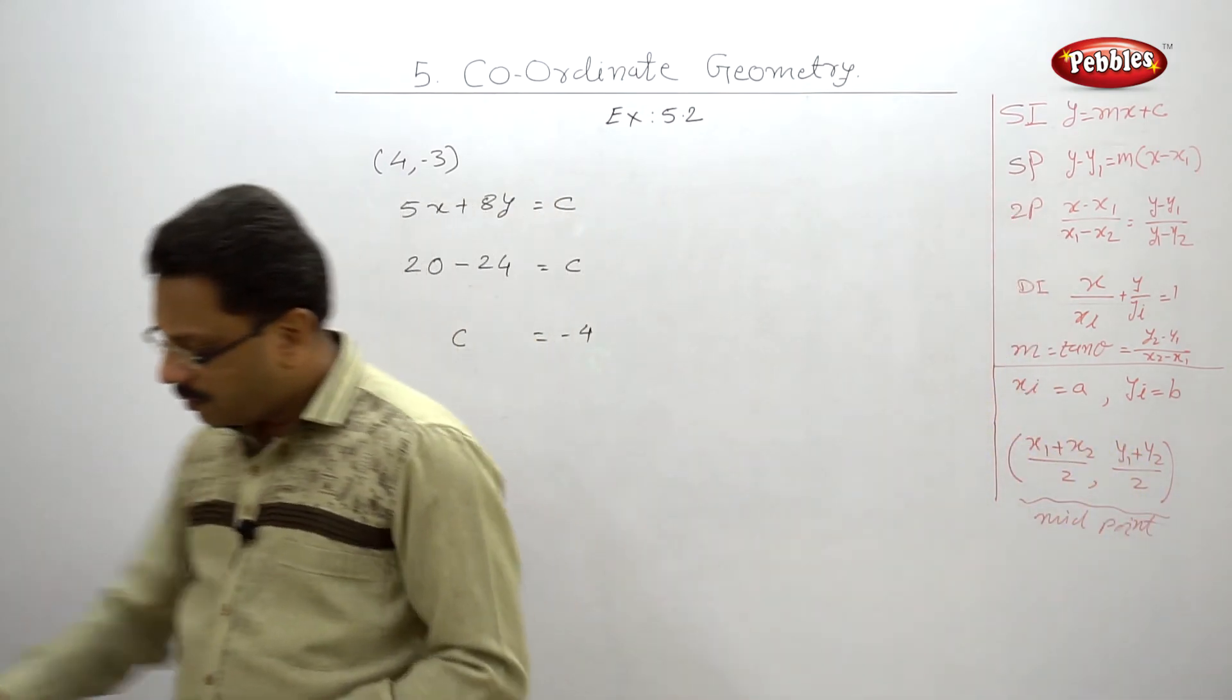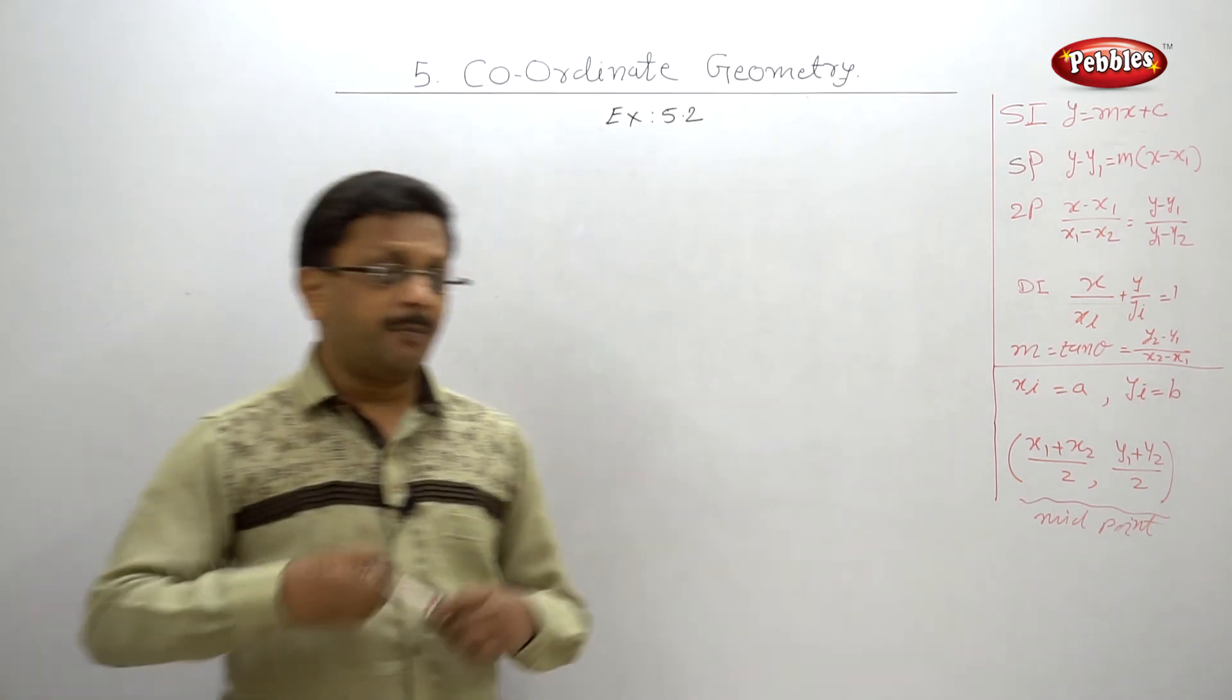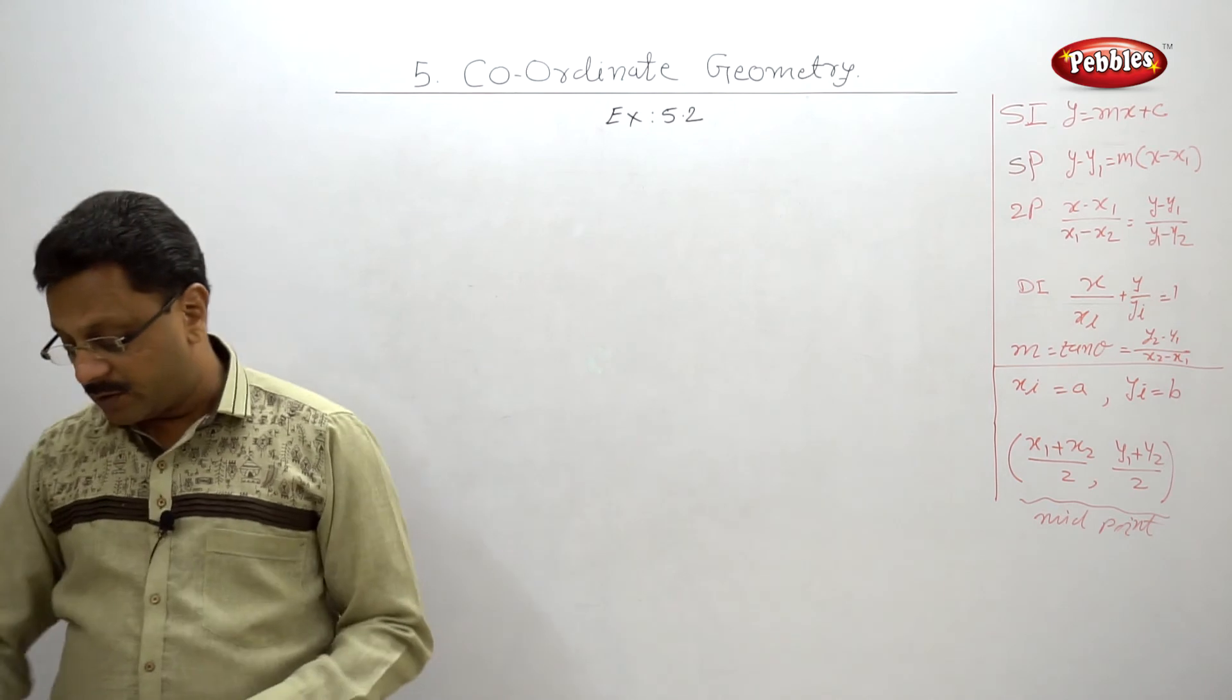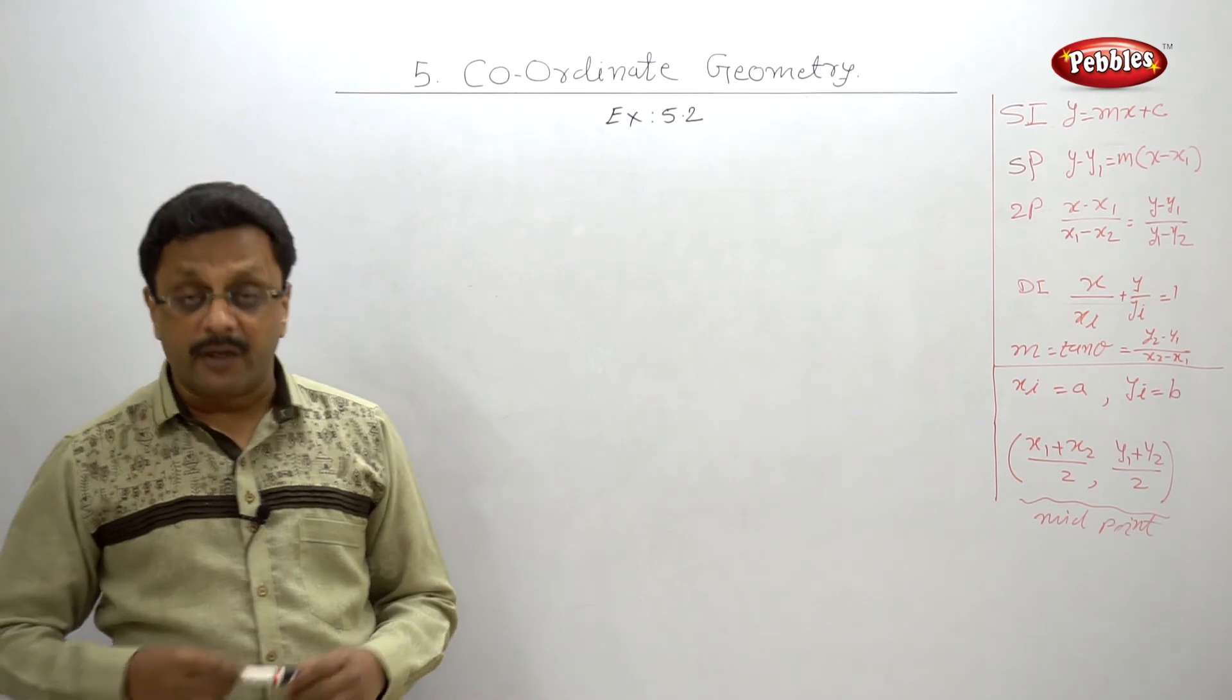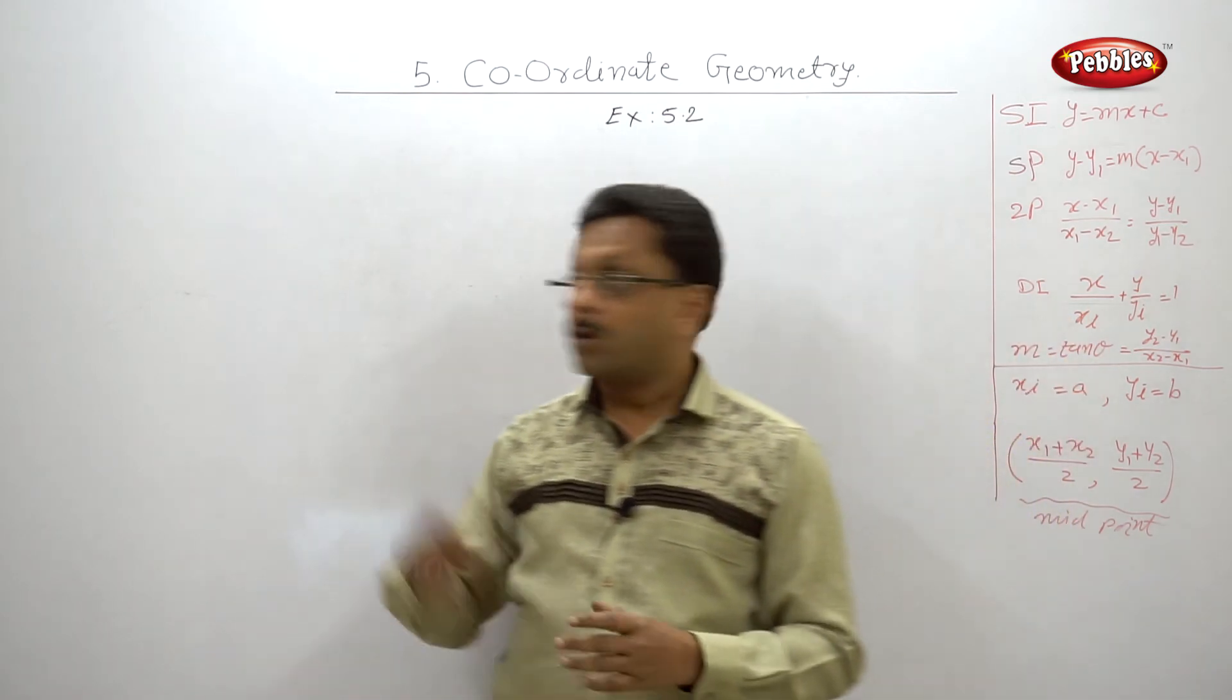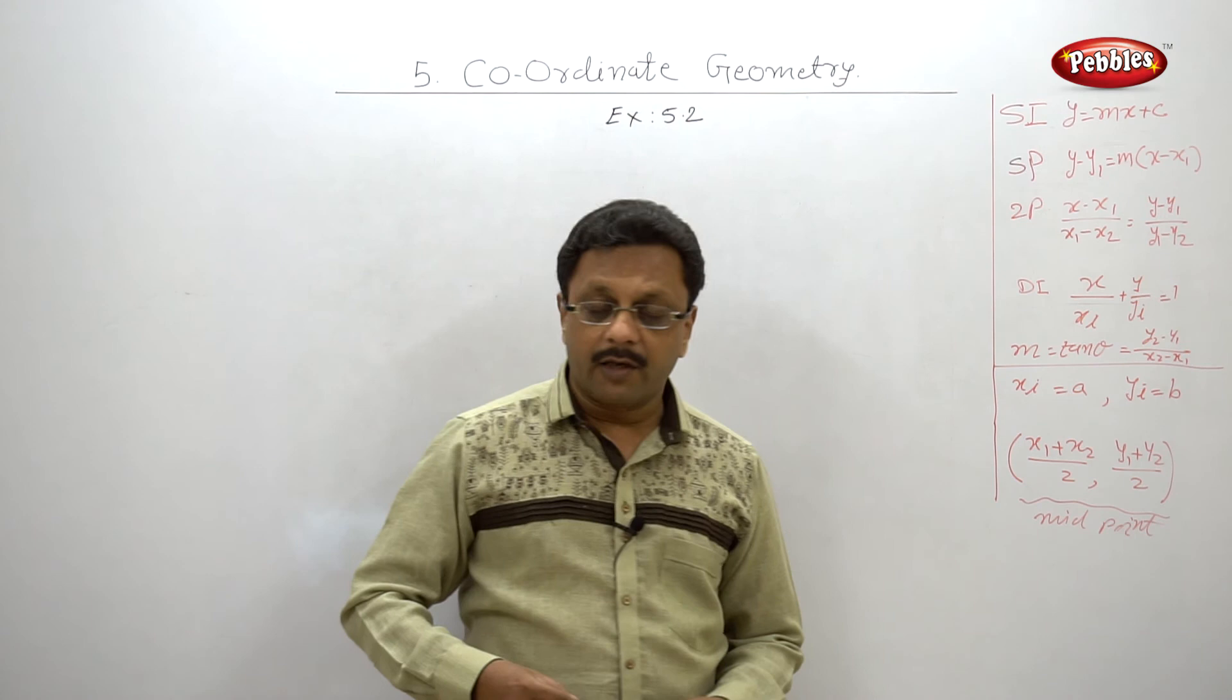So, here we finish exercise 5.2. The exercise 5.2 was very easy. It was just a substitution of formula and mainly based on the slope-intercept form. So, you have to practice all these examples because one of these examples will definitely come in your exam. Just find out slope and y-intercept. This example can come for one mark or the last two examples where the equation is given, one point is given. In equation, one variable is there and you have to find that variable.